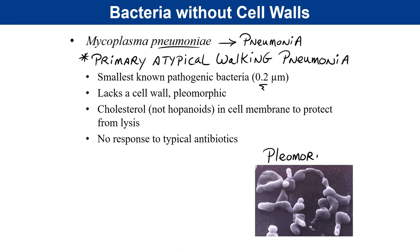Mycoplasmas have about as much shape as scrambled eggs — the cell wall typically gives bacteria their shape, and these organisms don't have one. To compensate for the lack of a cell wall, mycoplasmas carry cholesterol, which is highly unusual since most bacteria have hopanoids — cholesterol-like compounds that stabilize the cell membrane. These organisms have evolved to be completely dependent on their host; they are obligate intra-host parasites that do not live outside the human or animal body. They adopt cholesterol from their host to stabilize their cell membranes in place of peptidoglycan.